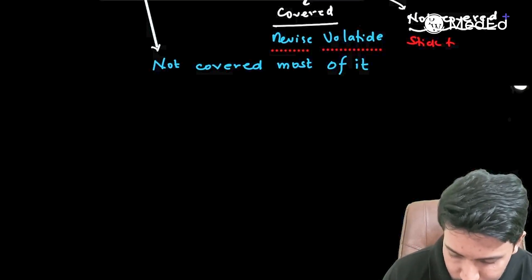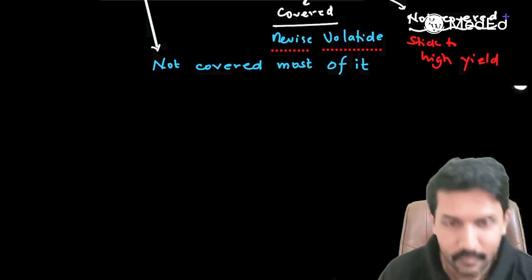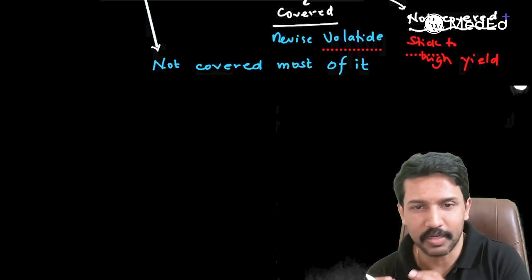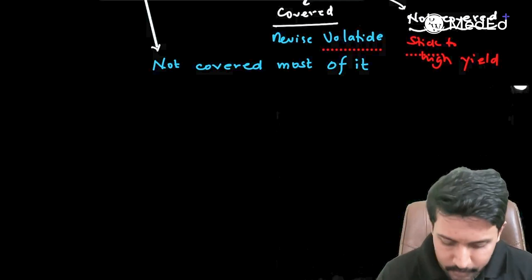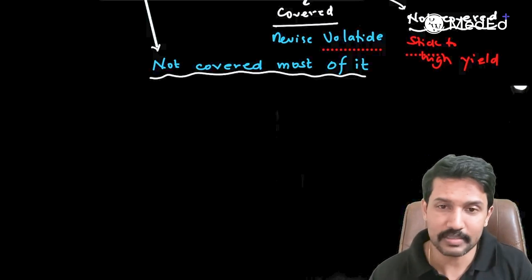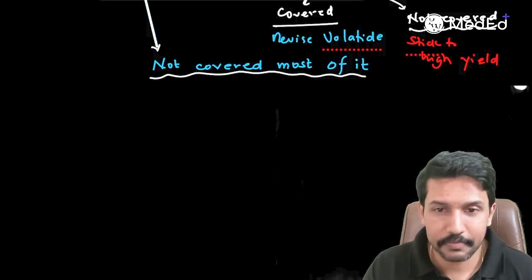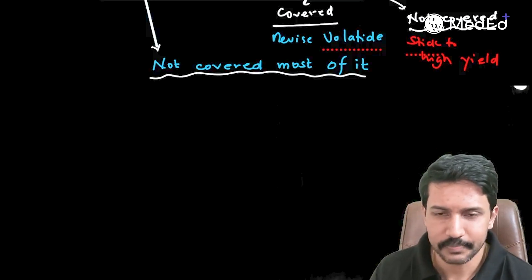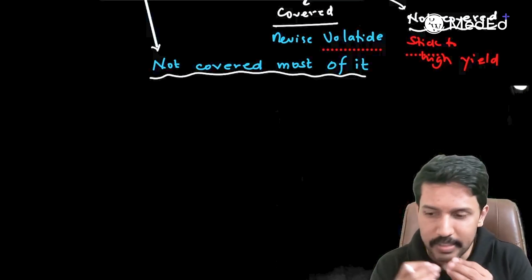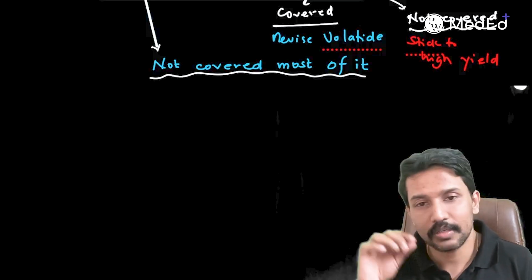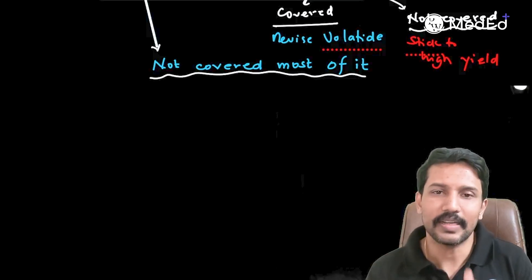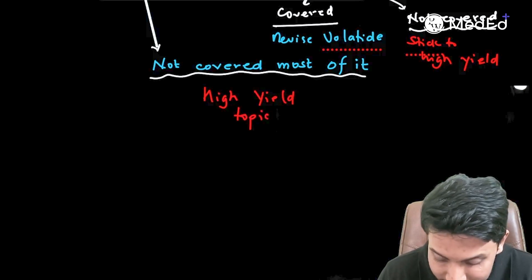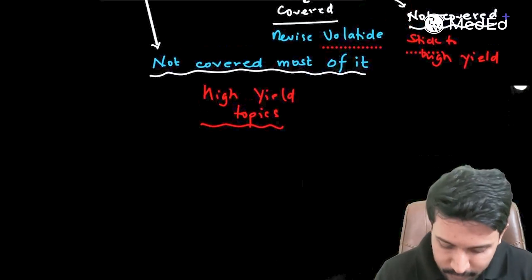Now, what if you have not covered most of Medicine? Can you enter the exam hall and miss nothing? Of course not — Medicine is a major subject and you can expect anywhere between 18 to 30 questions from it. You cannot afford to completely miss it. Please do not go into the examination hall without having touched at least the high-yield topics from the major subjects.